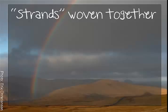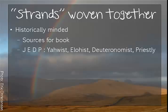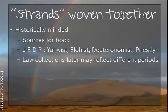For a long time these were viewed as different sources and identified by names J, E, D, and P — the Yahwist, the Elohist, the Deuteronomist, and the Priestly. In a similar way, different collections of laws in the later books of the Pentateuch sometimes deal with similar material in ways that might reflect different periods of Israel's history.